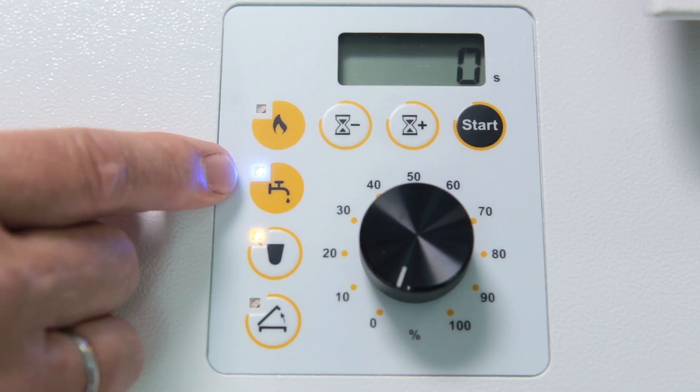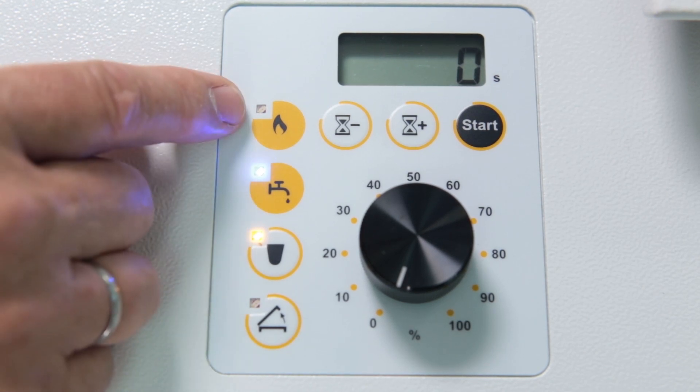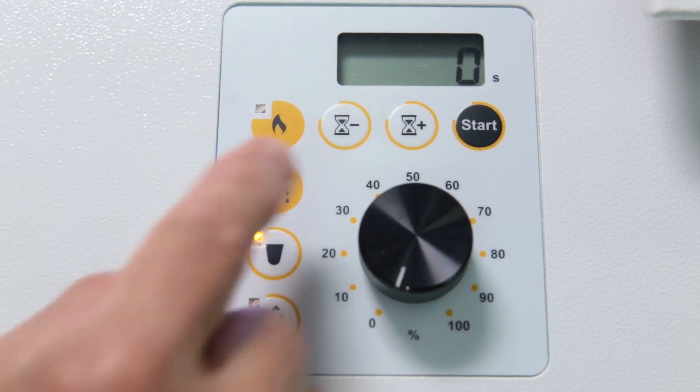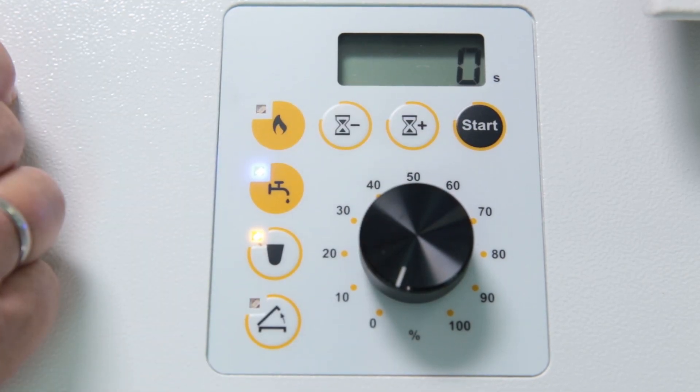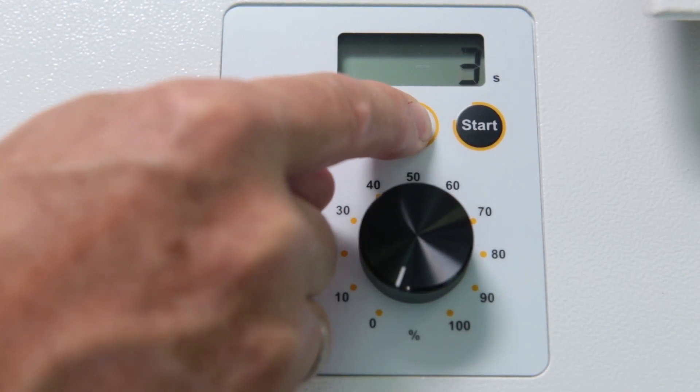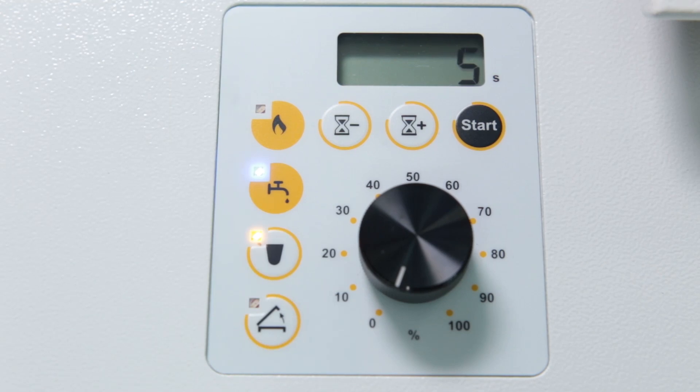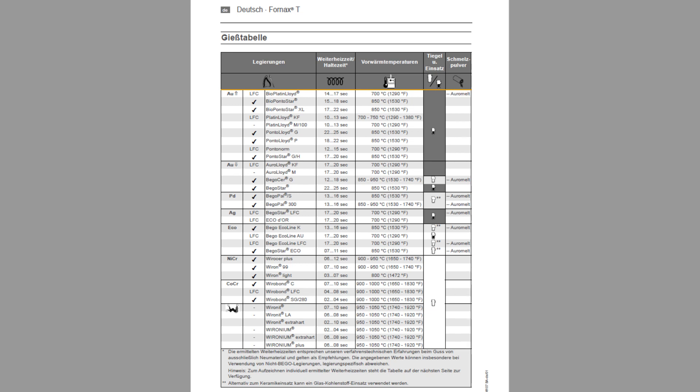This button signals whether the cooling system is working properly. The upper button will later show if the heating process has been activated. The hourglass sets the alloy-specific reheating time. For example, 5 seconds like in this case. The time can be entered individually with the plus and minus buttons. An overview of the alloy-specific heat-up times is included with each device.